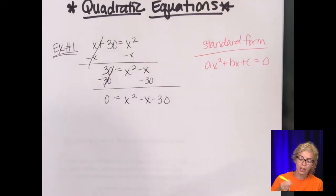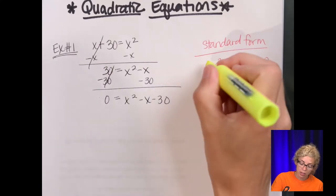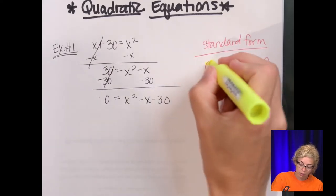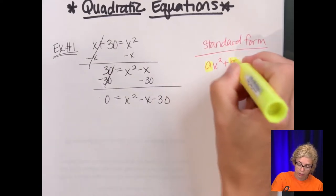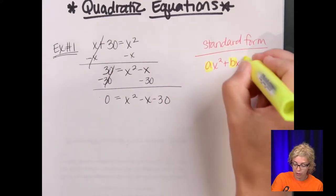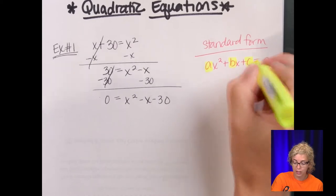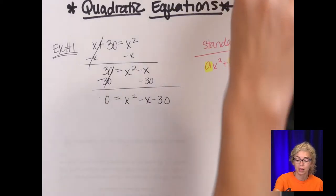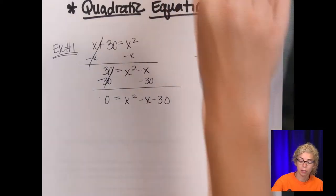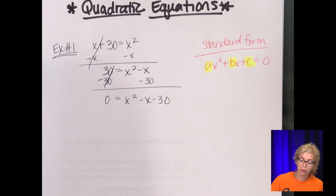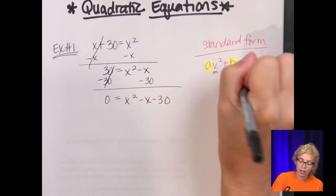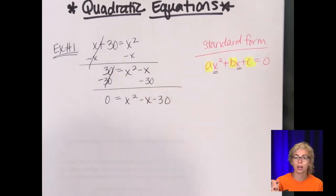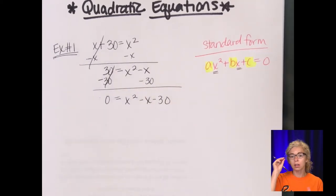Standard form for quadratic is ax squared plus bx plus c equals zero. Now remember, the a, the b, and the c are numbers. And they're going to be numbers that we plug into later — the quadratic formula. Remember your variables: x squared, x, and then c is the constant.